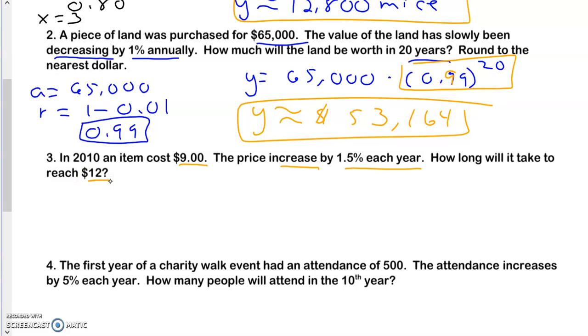So again, I'm going to do A equals 9. And my rate would be increased, so it's going to be 1 plus 0.015, and so that's going to get me 1.015. So that's my rate. So I'm going to do Y equals 9 times 1.015 to the X. Now here's the problem. I know what Y is. Y is 12. So this one is called guess and check.